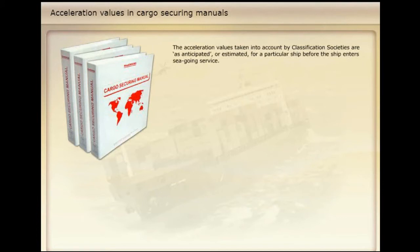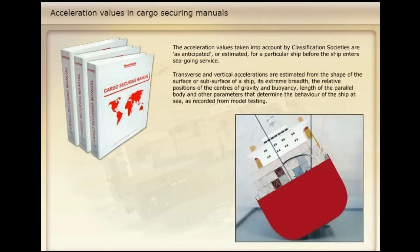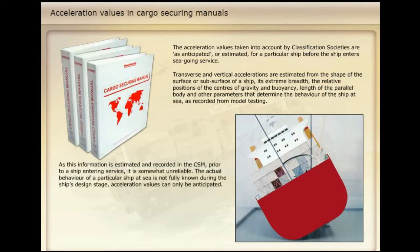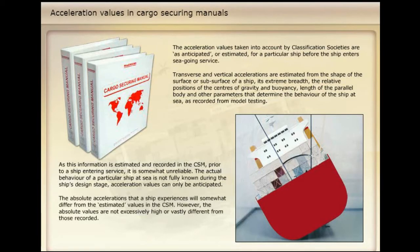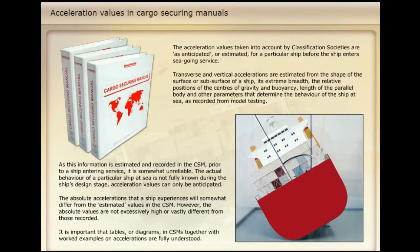The acceleration values taken into account by classification societies are as anticipated or estimated for a particular ship before the ship enters seagoing service. Transverse and vertical accelerations are estimated from the shape of the surface or subsurface of a ship, its extreme breadth, the relative positions of the centres of gravity and buoyancy, length of the parallel body, and other parameters that determine the behaviour of the ship at sea, as recorded from model testing. As this information is estimated and recorded in the CSM prior to a ship entering service, it is somewhat unreliable. The actual behaviour of a particular ship at sea is not fully known during the ship's design stage, and acceleration values can only be anticipated. However, the absolute values are not excessively high or vastly different from those recorded. It is important that tables or diagrams in CSMs, together with worked examples on accelerations, are fully understood.